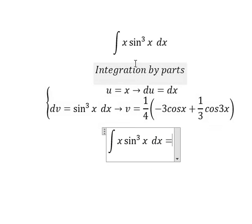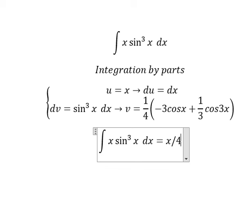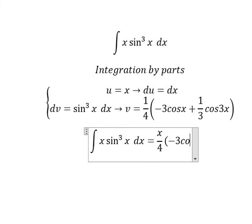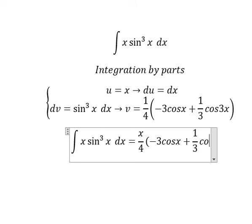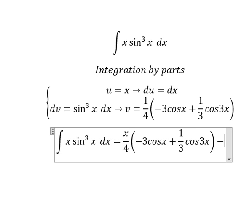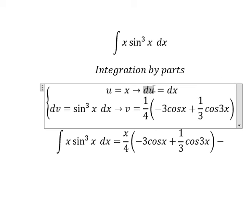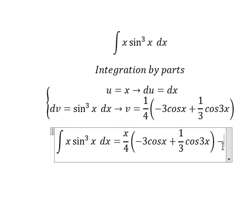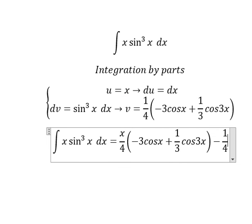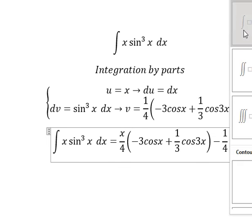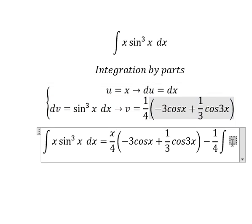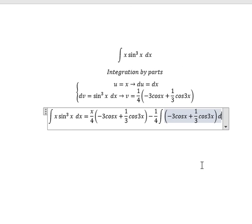So we have u multiplied by v, minus the integration. We have u multiplied by v, so we have 1 over 4, and we have the integration of this one, and I will put dv.